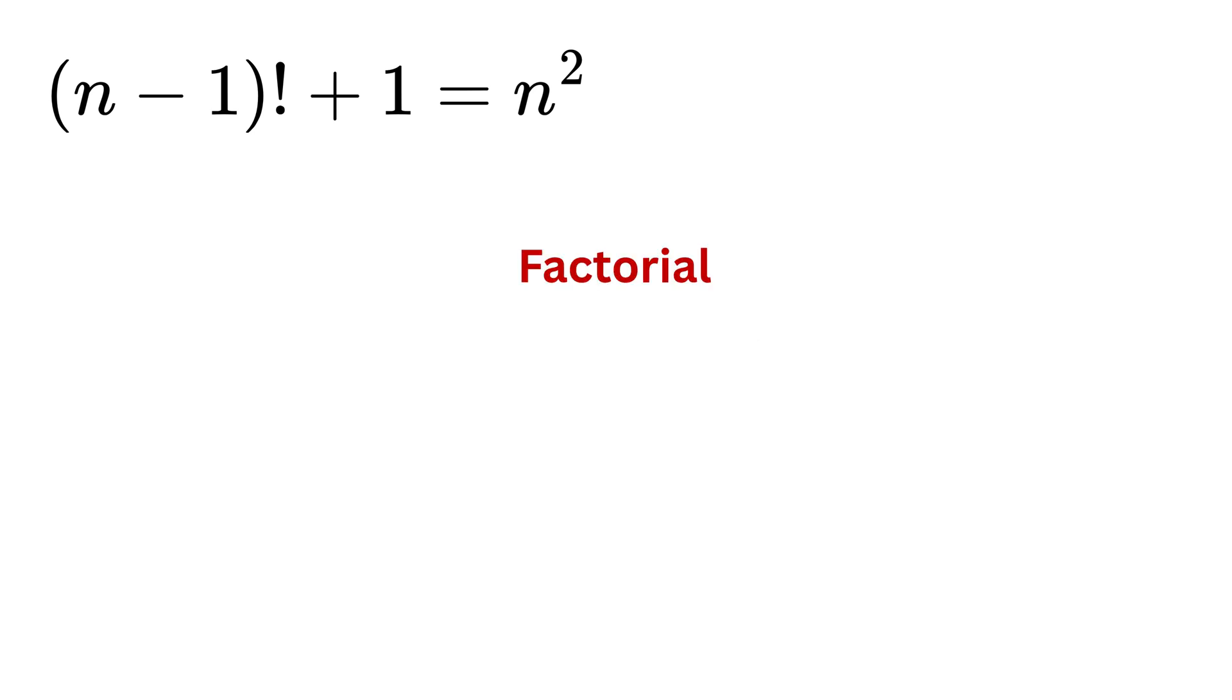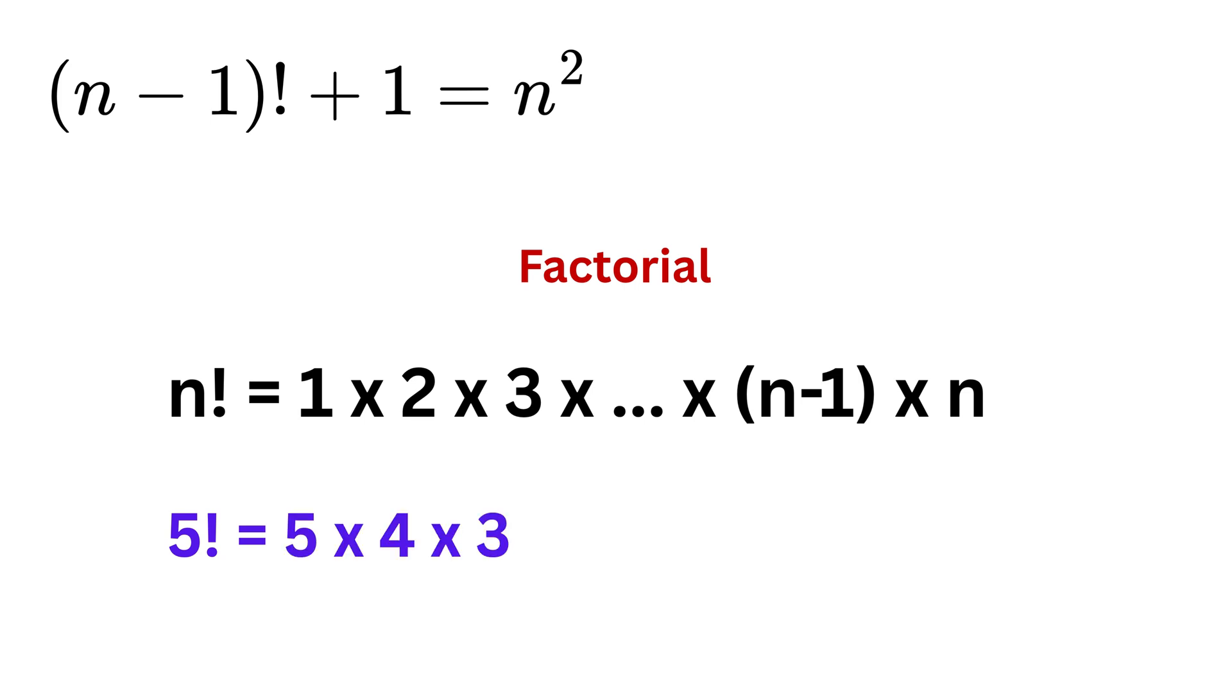Just a quick recap for those who don't know what a factorial is. When you see something like n factorial, it means you multiply all the natural numbers from 1 up to n. For example, 5 factorial means 5 times 4 times 3 times 2 times 1, which is 120.